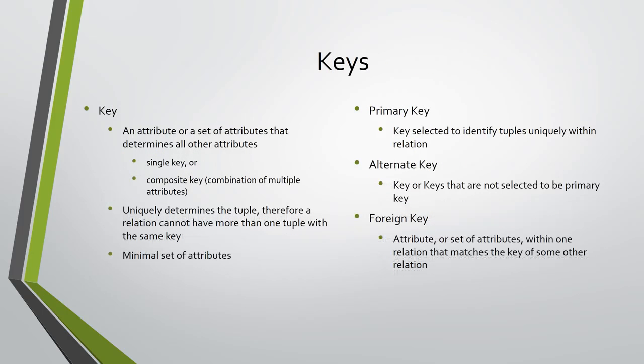An attribute or a set of attributes that determines all other attributes is called a key. A key might be a single attribute, or a set of multiple attributes, in which case it is called a composite key. A key uniquely determines the tuple, therefore a relation cannot have more than one tuple with the same key. Keys cannot contain a null value. Note that if you add more attributes to a key the result is also a key, as the combination uniquely determines the tuple.